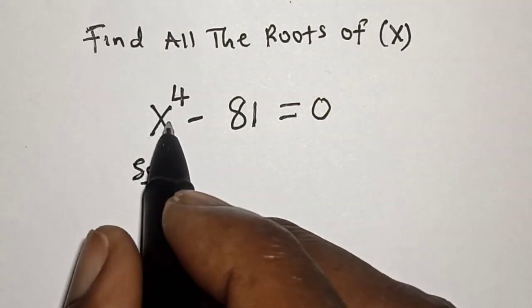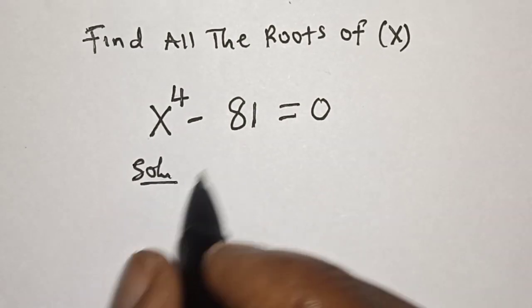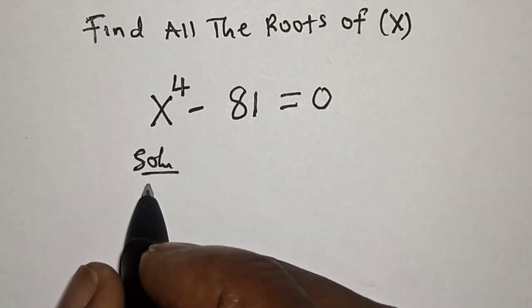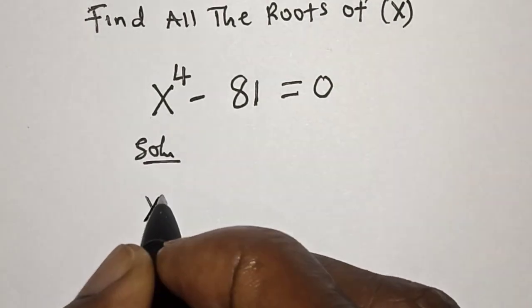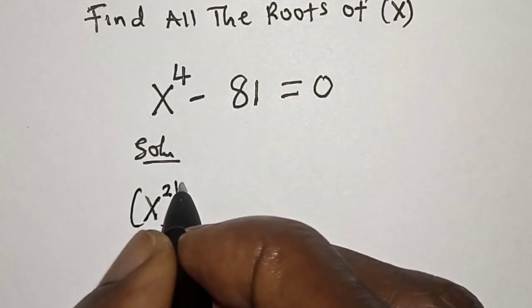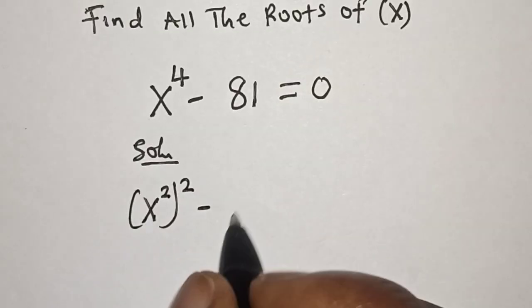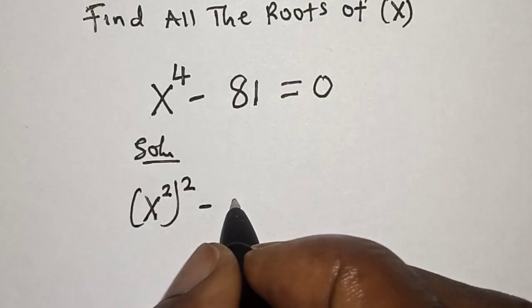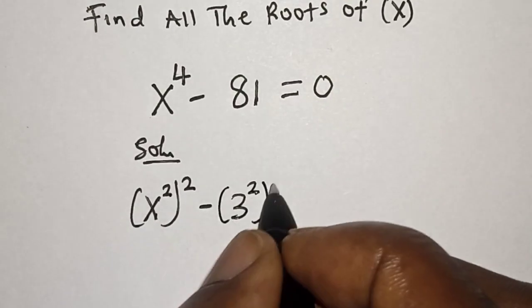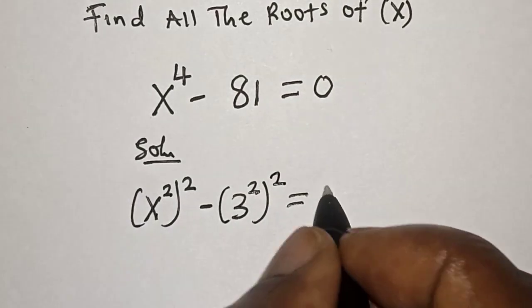We have x raised to power 4 minus 81 is equal to 0. Then x raised to power 4 can be written as x squared squared, and 81 can be written as 3 squared squared, so we have x squared squared minus 3 squared squared is equal to 0.